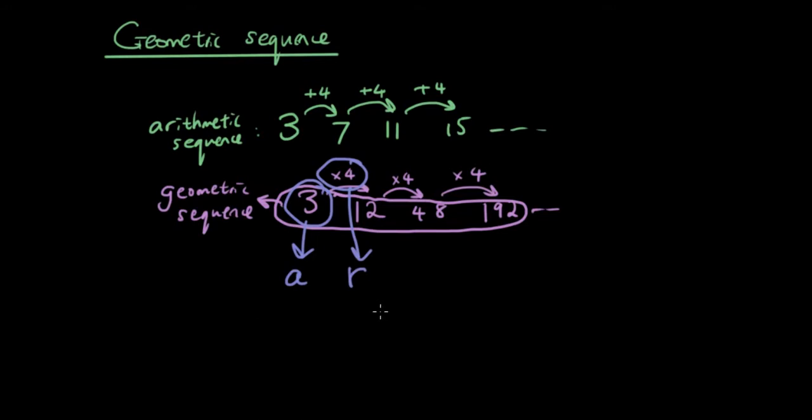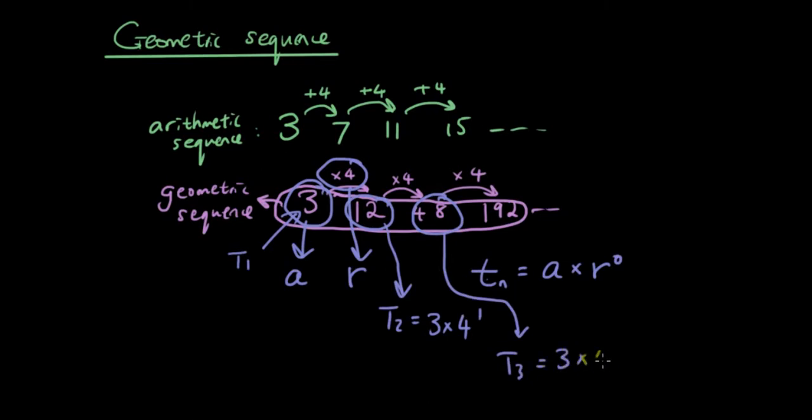Okay and the formula for finding the nth term in a geometric sequence is therefore t_n equals a times r to the power of... so you can see that this 3 is the first term so that's t_1. So t_1 is just a times r to the power of 0. And this 12 is t_2 which is 3 times 4 to the power of 1 and 48 is t_3 which is 3 times 4 to the power of 2 and so on.